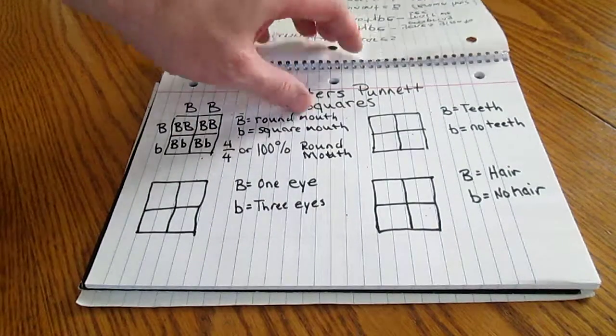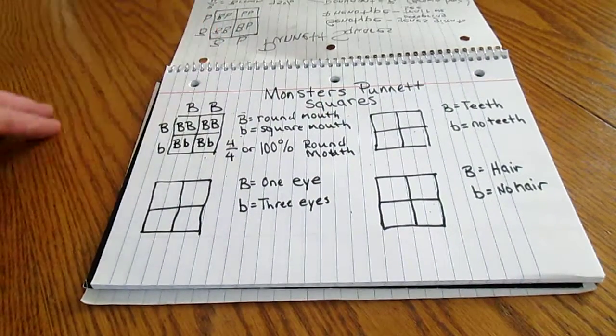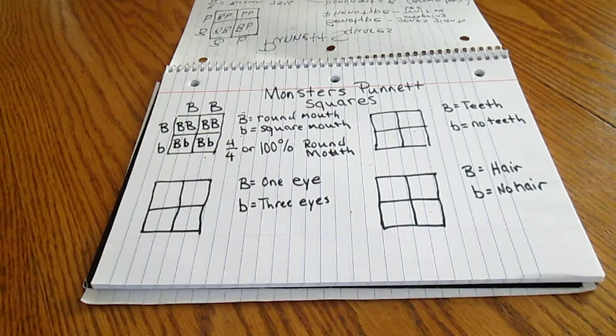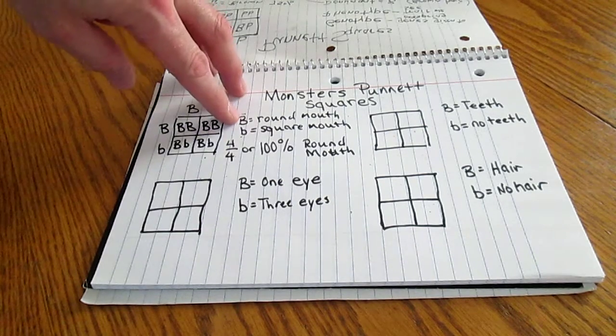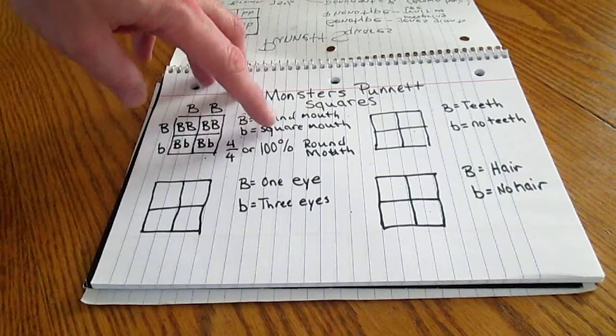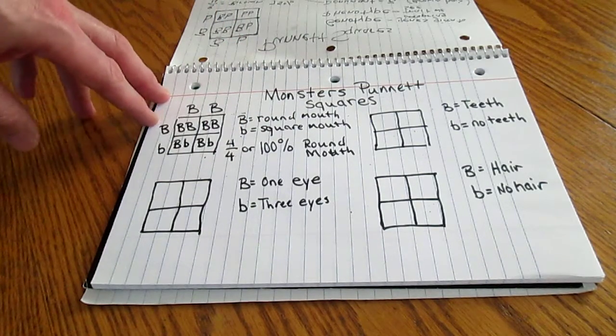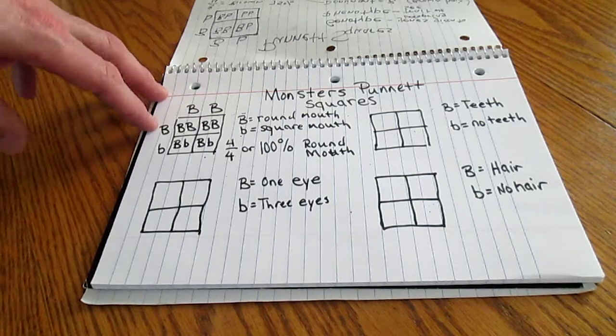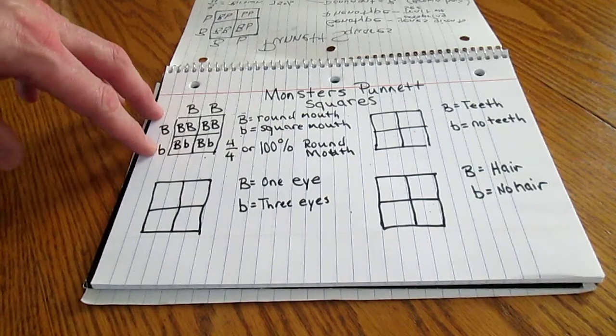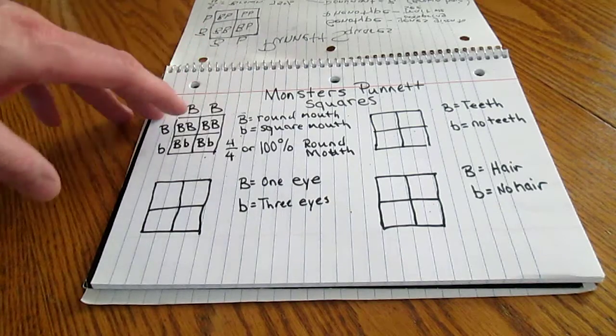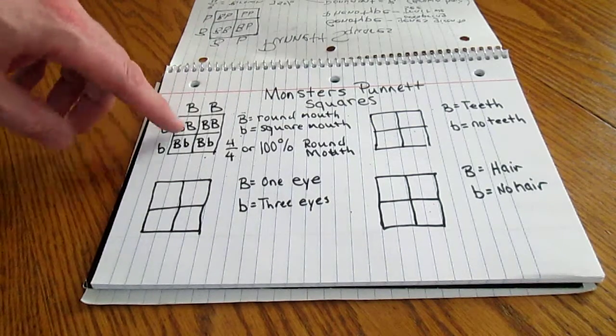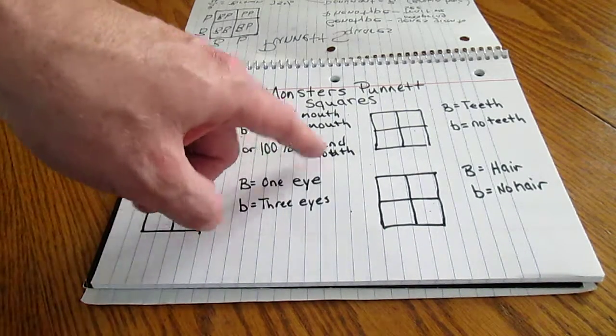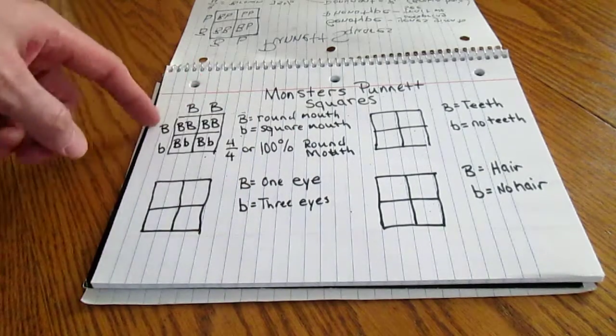Now, when it comes time for you to do your monster's Punnett squares, you're going to do a lot of this in class. So Ms. Ramez will be there to help you. But I have done one for you, just an example. Our dominant trait is a round mouth. Our recessive trait is a square mouth. Now, when I did the coin flip, this is my combination. Dad had two dominant traits, so Dad had a round mouth. Mom had a dominant trait and a recessive trait, but she still had a round mouth as well. Now, in this case, when we do our combinations, and I'm going to show you how to do that, four out of four children, or 100%, would have a round mouth because both Mom and Dad have the dominant genes.